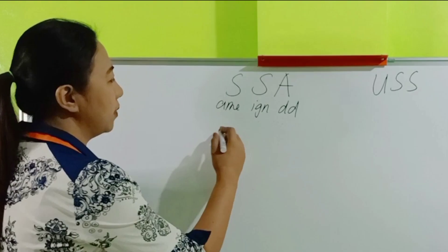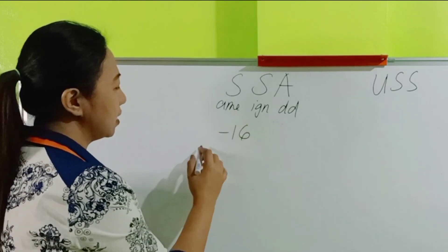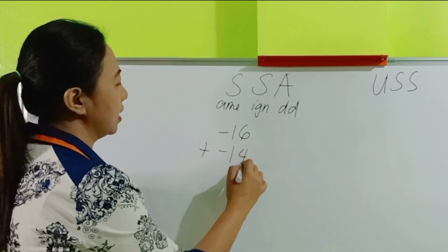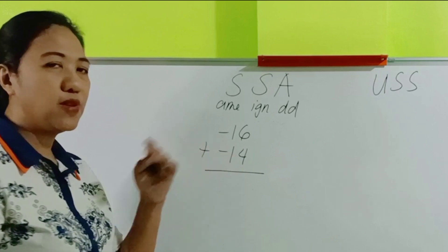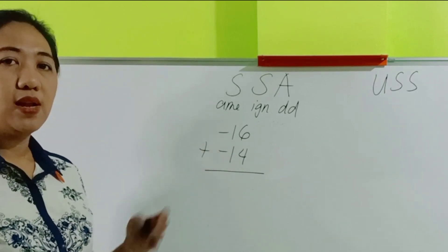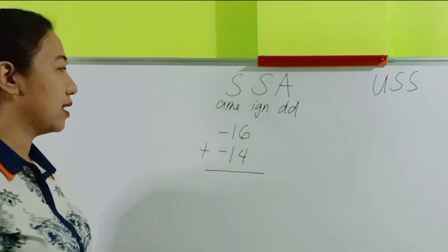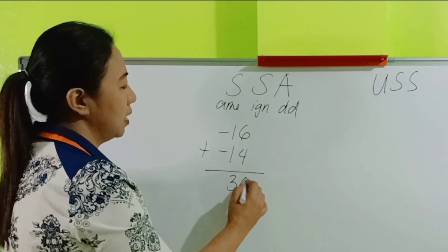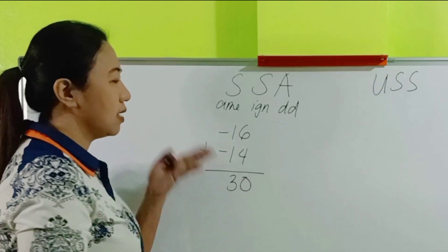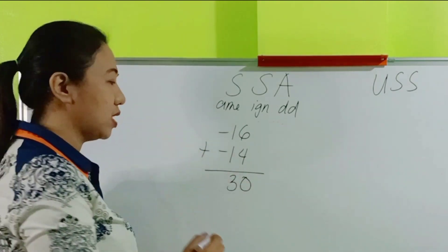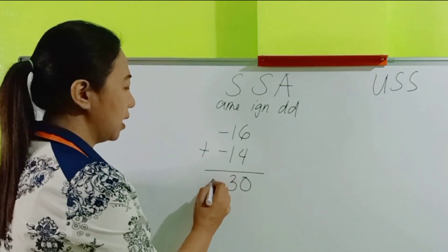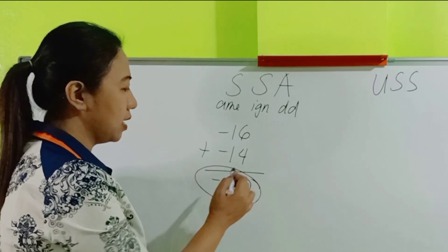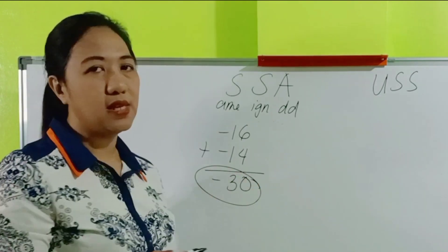For example, we have negative 16 plus negative 14. They are both negative numbers, so let's just add. 16 plus 14 is 30. And then copy the common sign, which is the negative sign. So the answer is negative 30.